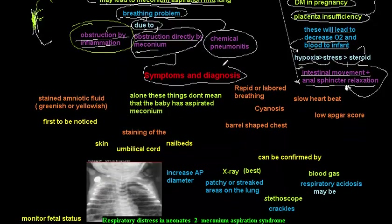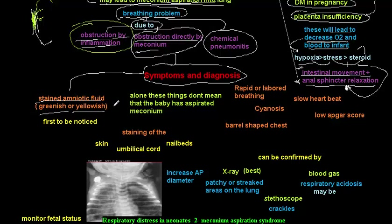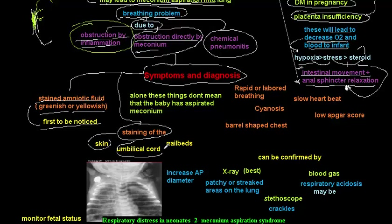The first thing to notice in meconium aspiration is stained amniotic fluid — a greenish or yellowish color, which is very indicative of meconium presence. Not only the amniotic fluid will be stained; there is also staining of the skin, umbilical cord, and nail beds of the child if significant meconium has been released.